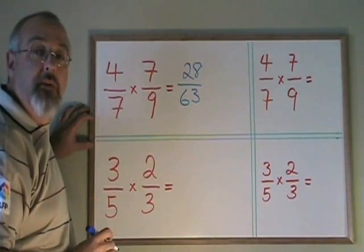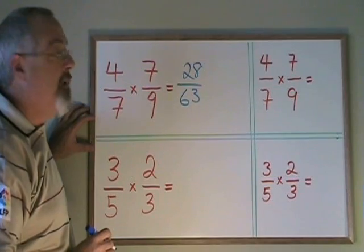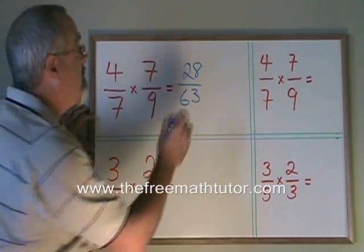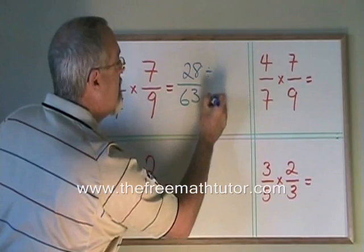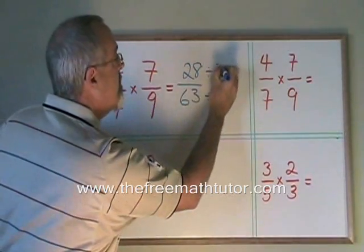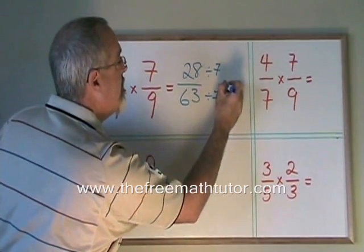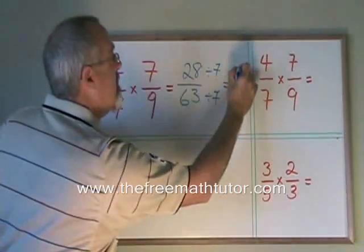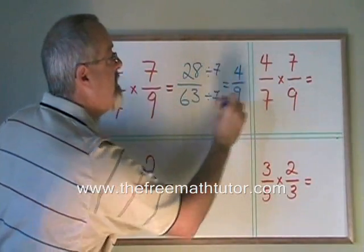This fraction can be reduced. The top and the bottom have a common factor of 7. So if I divide both top and bottom by 7, I get 4 9ths as my answer.